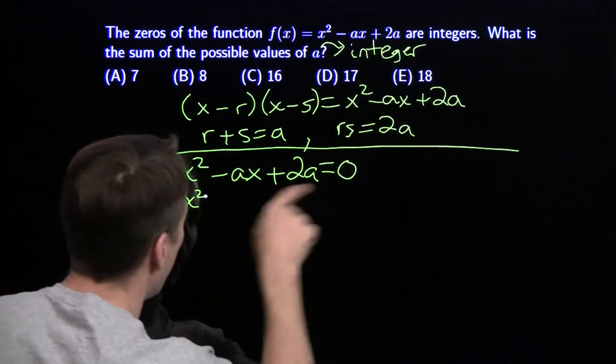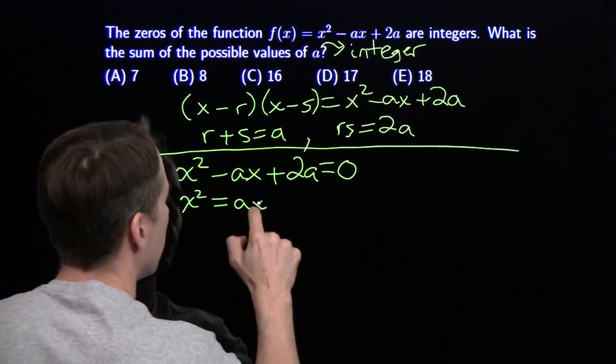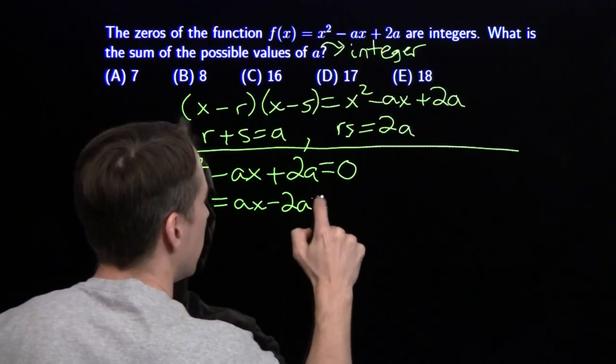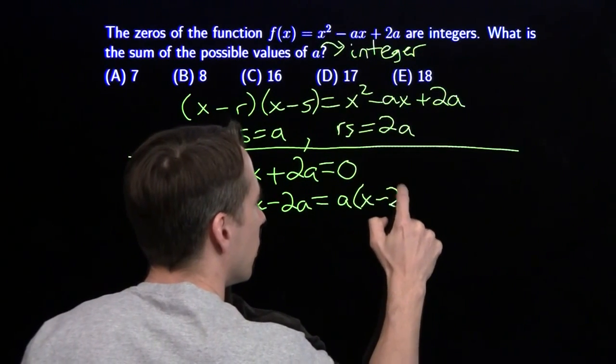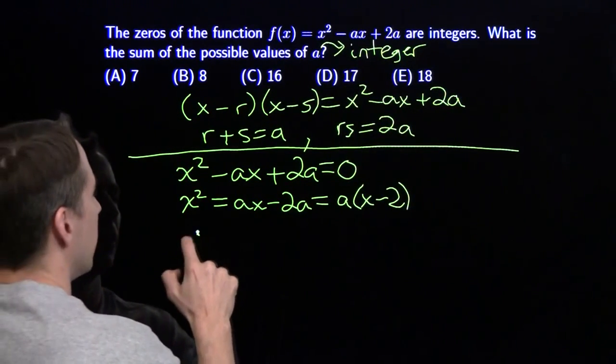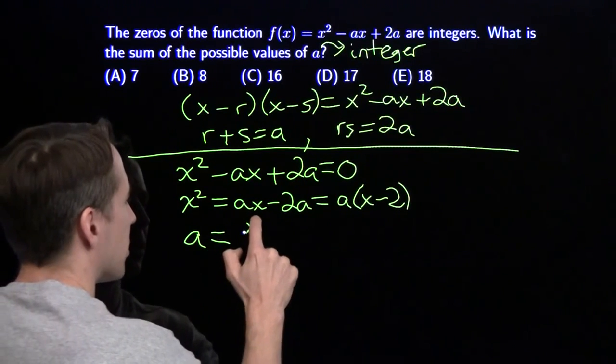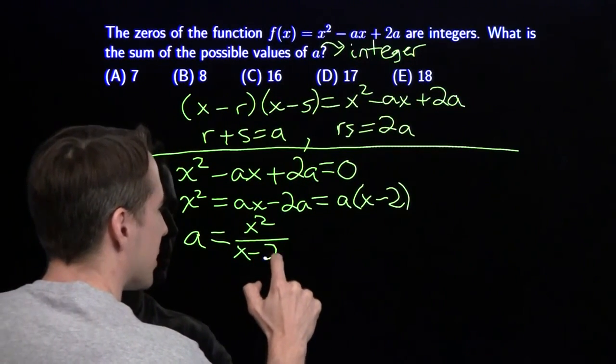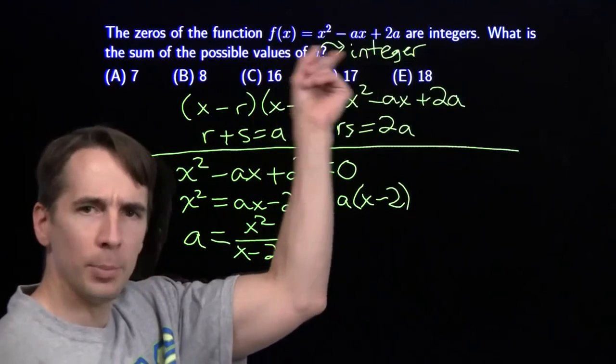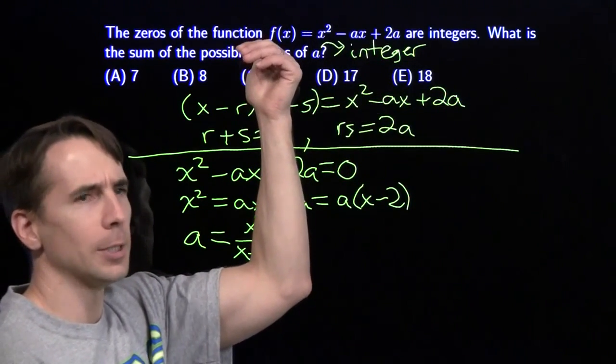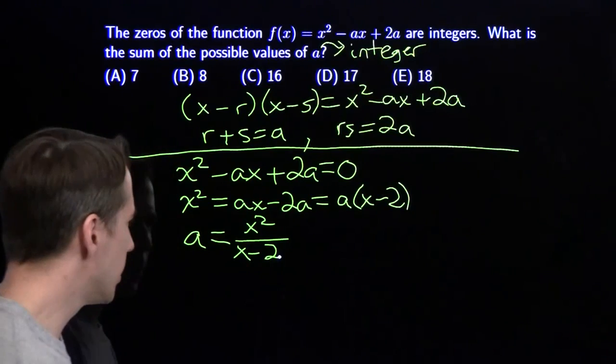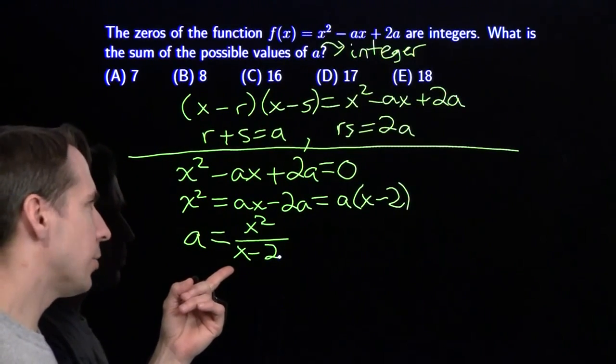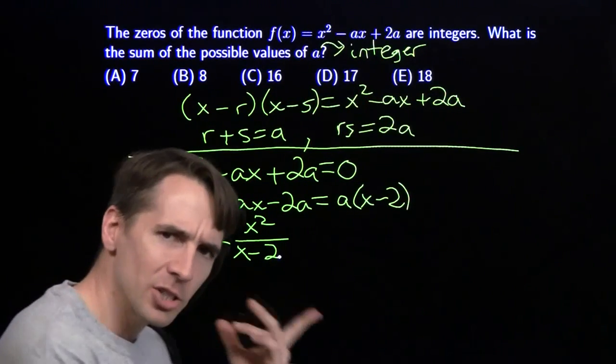I'll bring the terms with a to the other side, factor out the a, and divide by x - 2. Now x can't be 2, because if you stick 2 up here, the function is always 4. So 2 is not a zero.